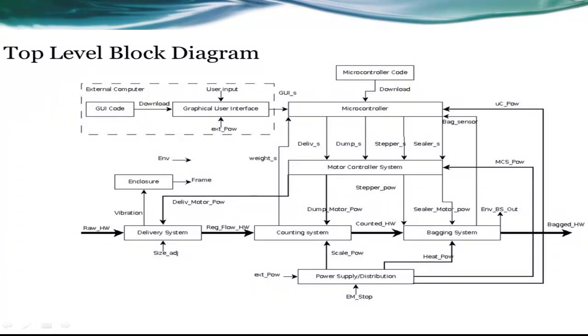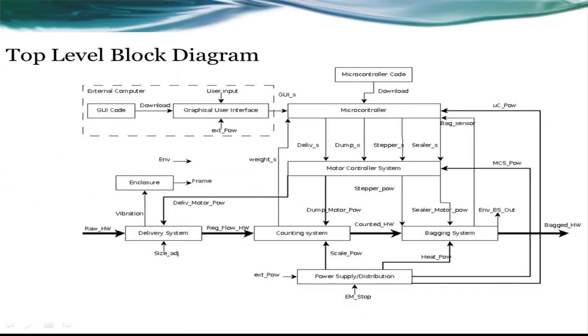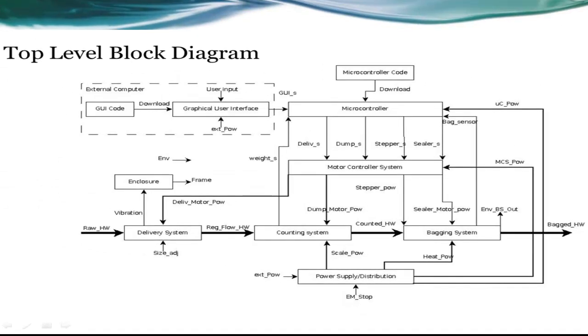Unfortunately, the signals output by the microcontroller are simply not powerful enough to drive the motors directly. Because of this, we need the motor controller system. The motor controller system combines the logic level signals from the microcontroller with external power to create signals strong enough to drive the motors directly. The frame block connects all of the subsystems together physically. It also encloses the entire project for safety. The power supply and distribution block takes power from an outlet and gives all the electronic components the power they need.